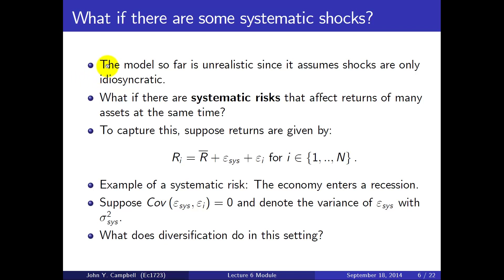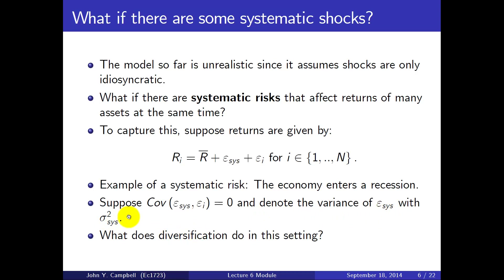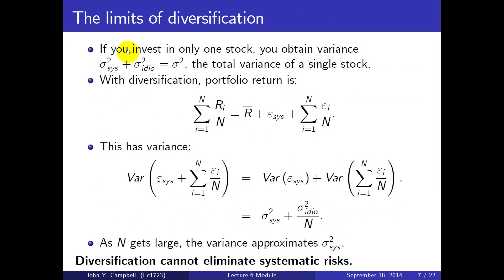That may be a bit too optimistic, because we've assumed unrealistically that shocks are purely idiosyncratic. Now let's think about what happens if there are systematic risks affecting many assets at the same time. Suppose the return on stock i is the common mean R-bar plus a systematic shock — the same for every stock — plus an idiosyncratic shock. An example of systematic risk is the economy going into a recession: all stocks go down at the same time. We assume the systematic shock is uncorrelated with the idiosyncratic ones, and its variance is sigma-squared-sys. If you invest in only one stock, you get the variance of the systematic shock plus the variance of the idiosyncratic piece — the total variance of a single stock.